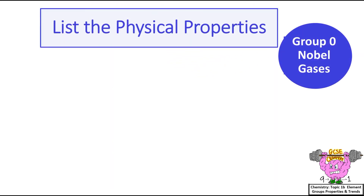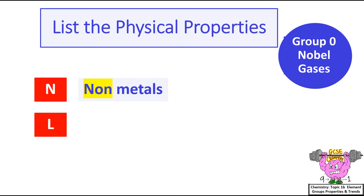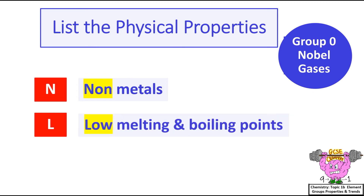List the physical properties of Group 0 noble gases. The acronym used to remember them is NL, or NOT LOGICAL: noble gases are non-metals, and they have low melting and boiling points.